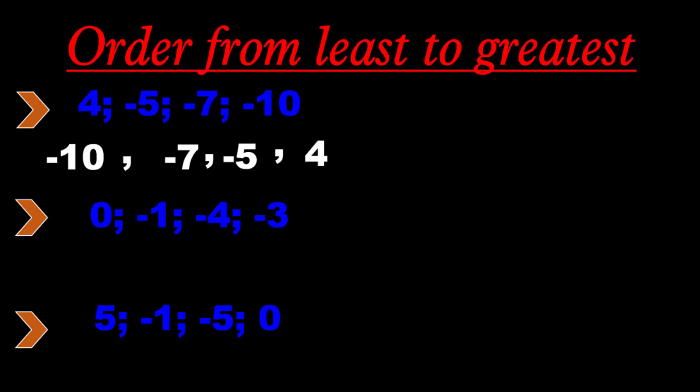Next set: 0, negative 1, negative 4, negative 3. The smallest is negative 4, because all the other numbers — 0, negative 1, negative 3 — lie to the right of negative 4. So the order is: negative 4, negative 3, negative 1, and the greatest is 0. We know that 0 is greater than any negative integer.